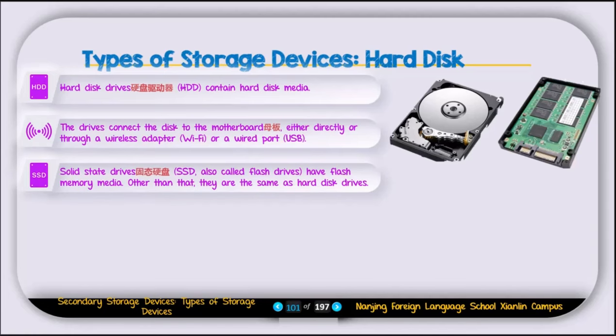The key difference between HDD and SSD is that a hard disk has moving parts — it has a spinning disk — while an SSD does not have any moving parts and is made up of chips.